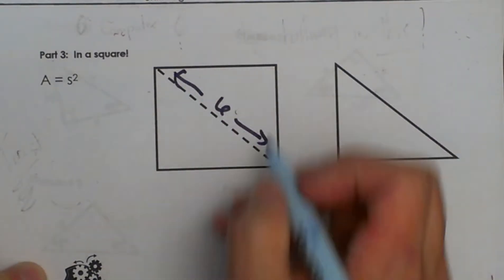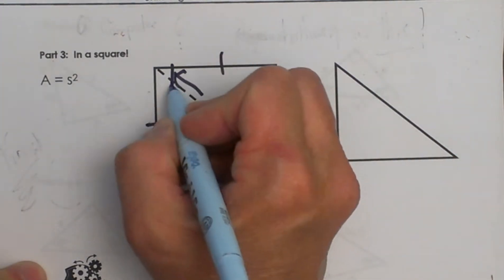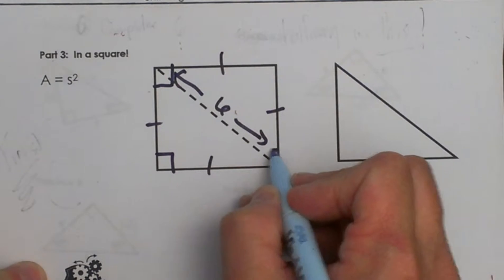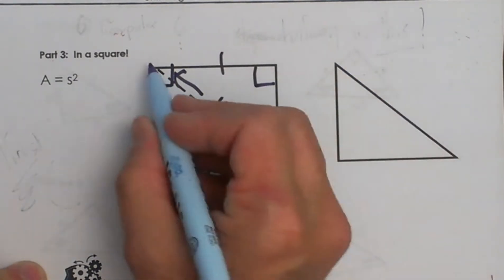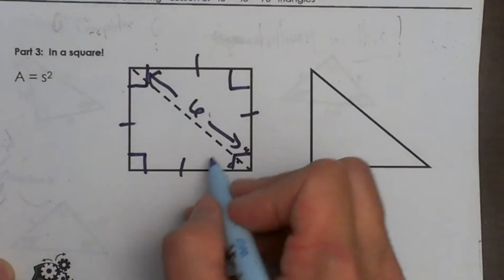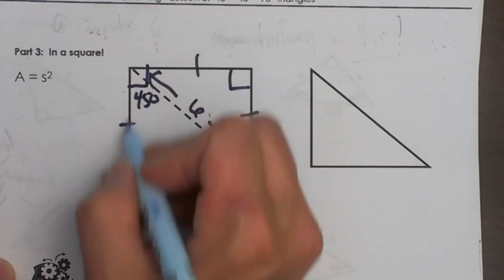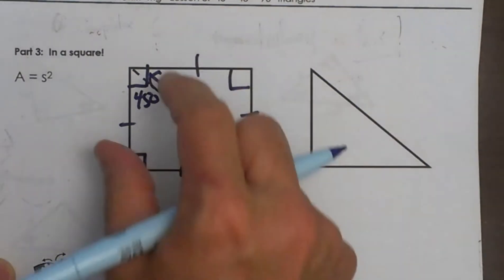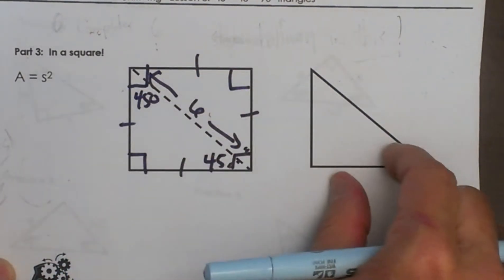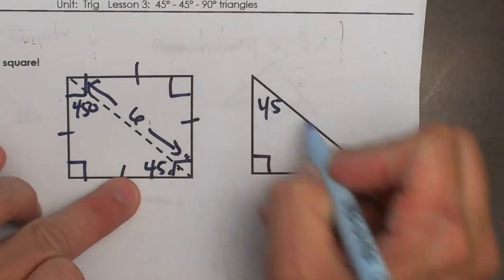What do we know about a square? We know all four sides are equal and we have four right angles. So when we draw in a diagonal it cuts this 90 degree angle in half and makes it 45 and 45, and 90 over here. So I am going to pull this triangle out and redraw it over here so I have a 45-45-90 triangle.